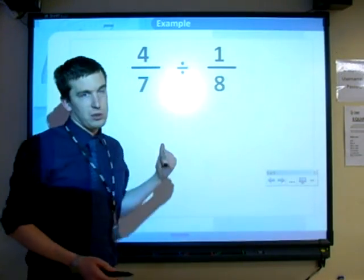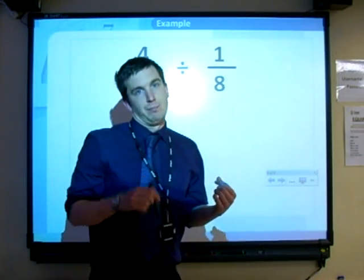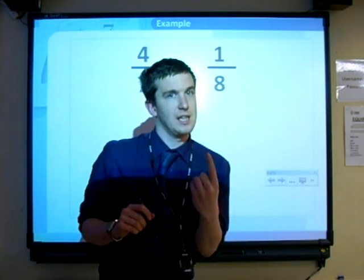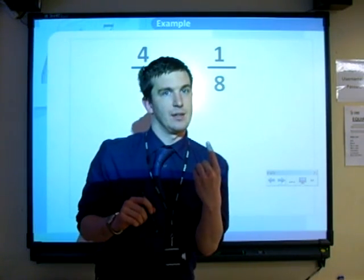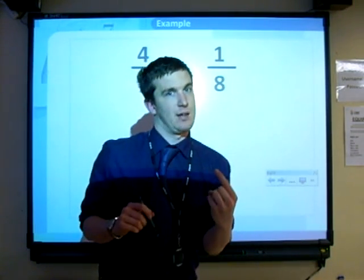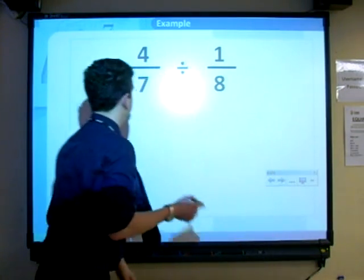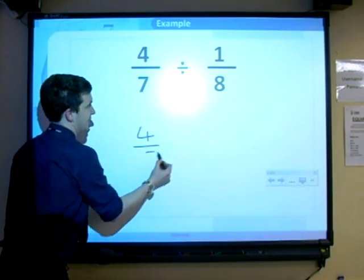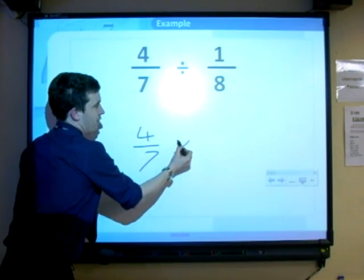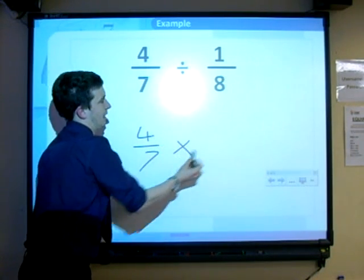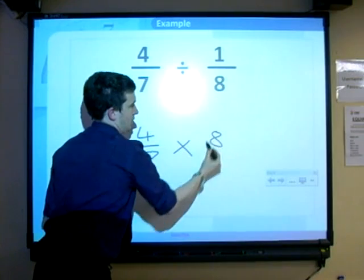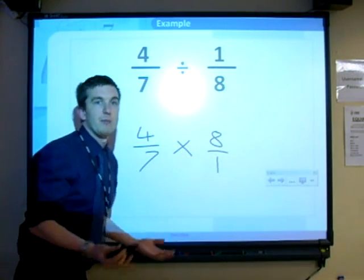Right, now this one's a little bit harder because we're dividing, but there's only one thing you've got to remember, one thing, and it's flip reverse it. Because we rewrite the question, 4 over 7, reverse the sign, and flip the fraction. So we flip reverse it.